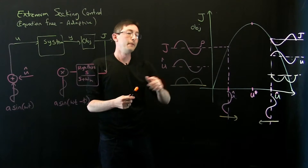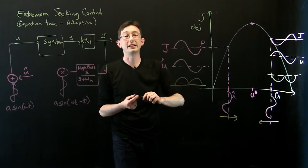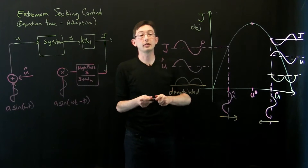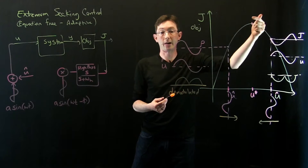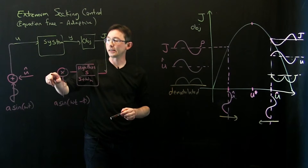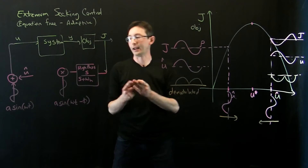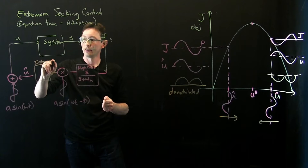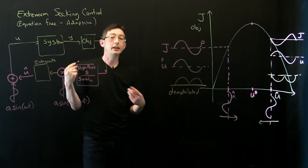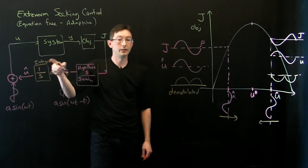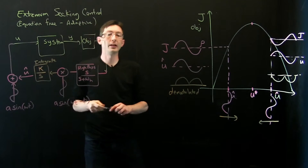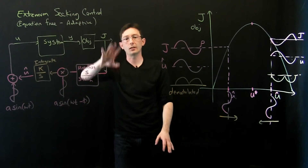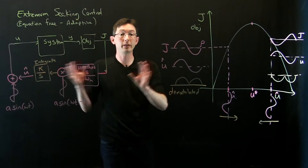This demodulated signal — call it ξ — is mostly positive when I'm to the left and mostly negative when I'm to the right of the optimum. I integrate ξ into my best estimate u_hat using an integrator (k/s in the Laplace domain), and that's essentially the complete extremum seeking control diagram for this simple example.